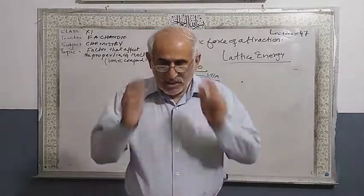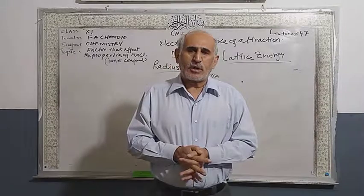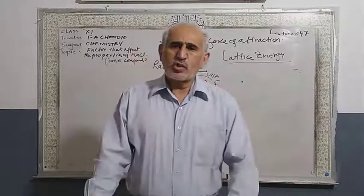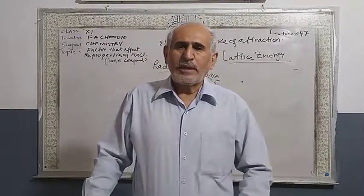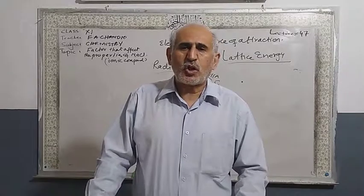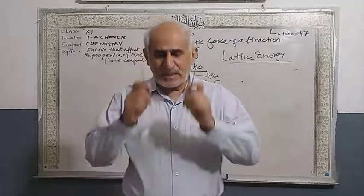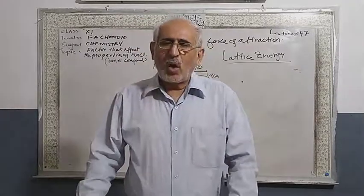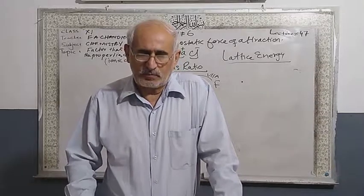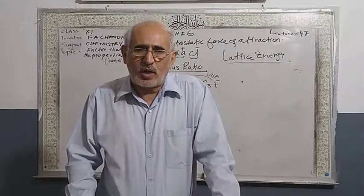Metallic solids are made up of the same kinds of atoms — iron metal has only iron atoms, copper metal has only copper atoms. A special kind of bond is formed in metals called the metallic bond. The metallic bond is explained by the electron sea or electron gas theory.